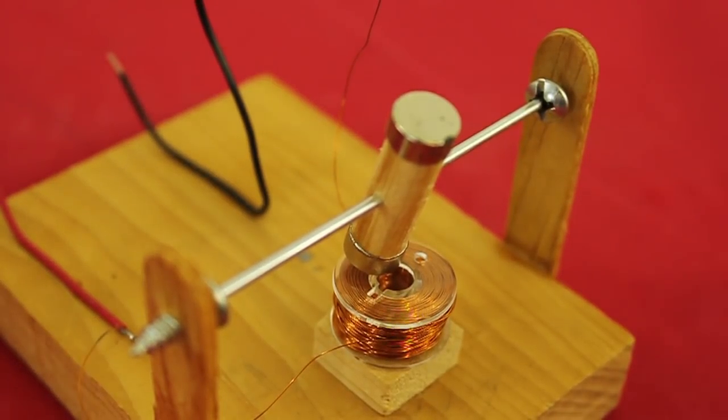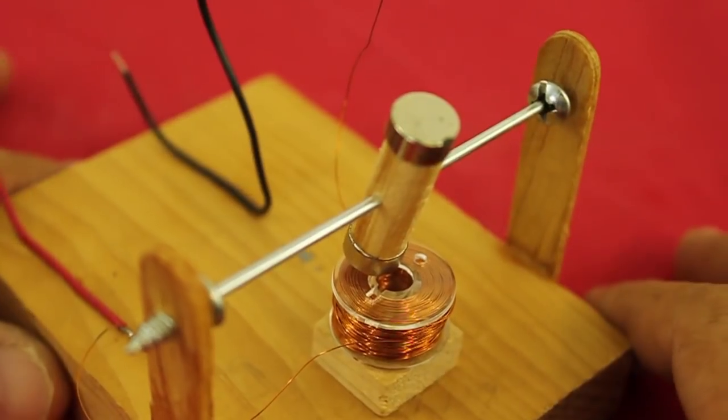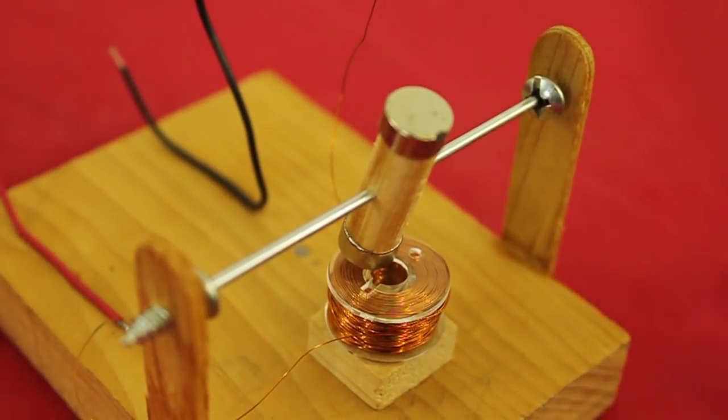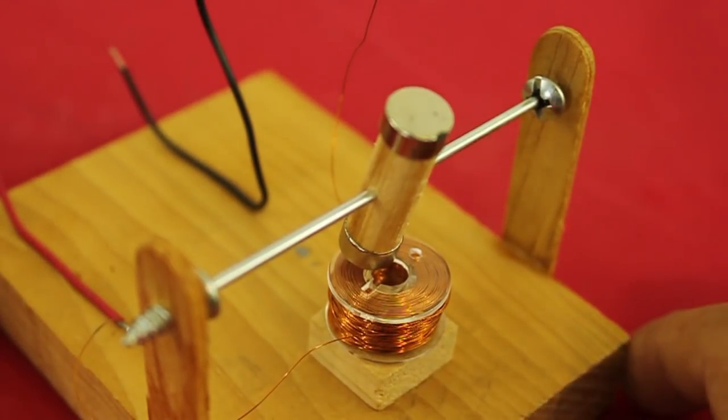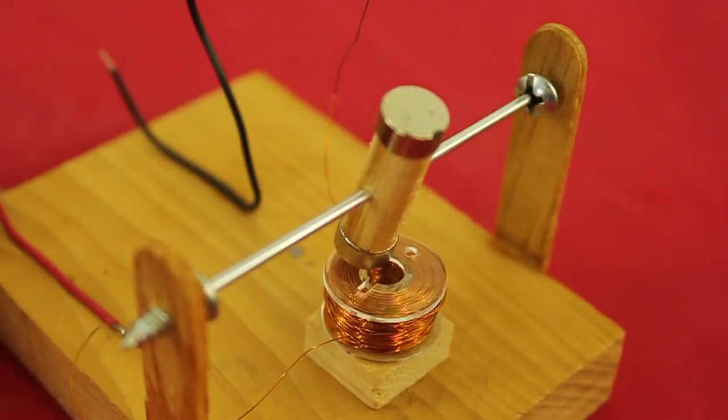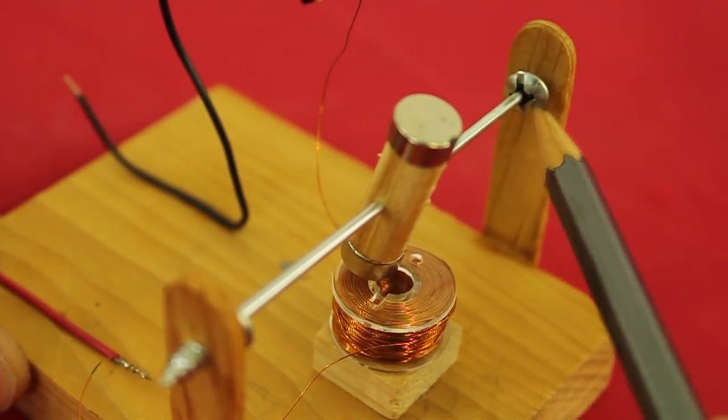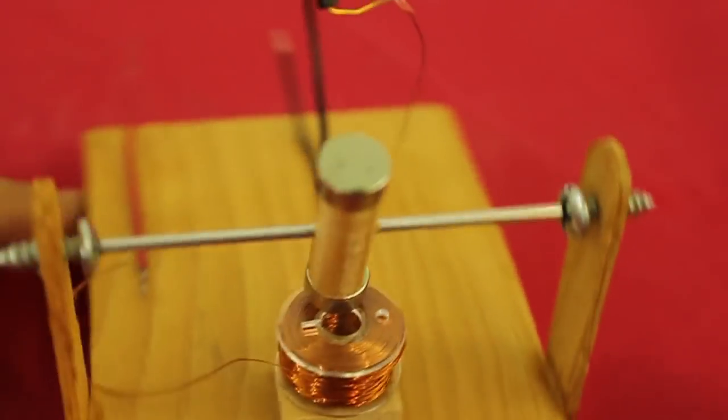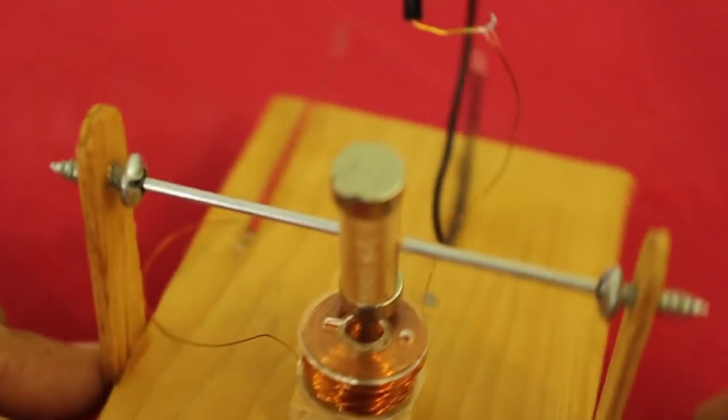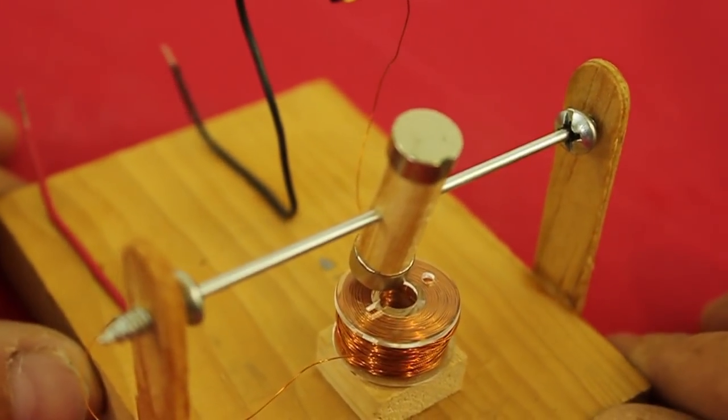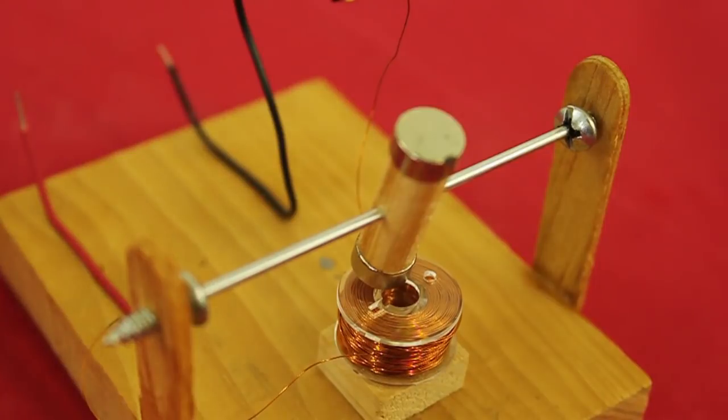One of the tricky parts when building a homemade electric motor is how to suspend the rotor axis, and Lead Motor's solution is very simple but effective and consists in putting the axis in a pair of Phillips screws. So it is very easy to make.